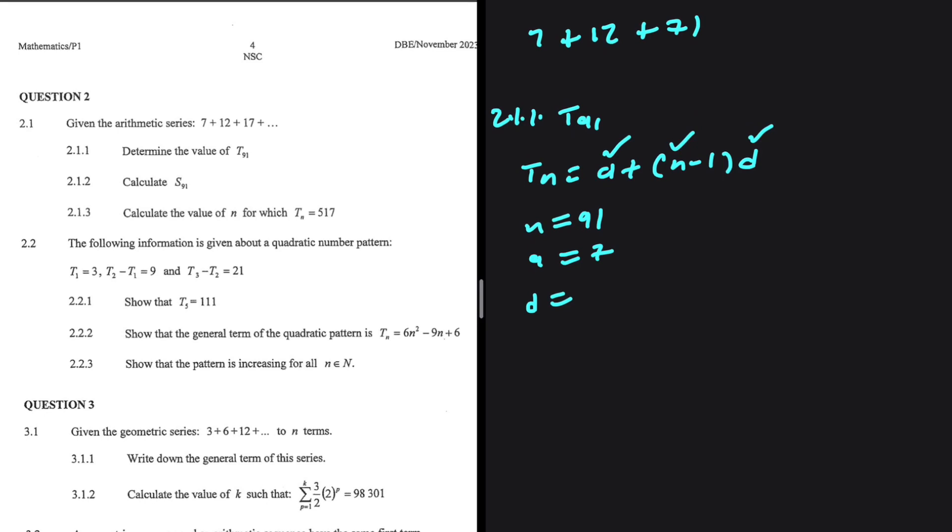How do we do that? T2 minus T1, T3 minus T2, the difference between any two terms following each other. So if we say D equals T2 minus T1, we're going to have 12 minus 7, which equals 5.